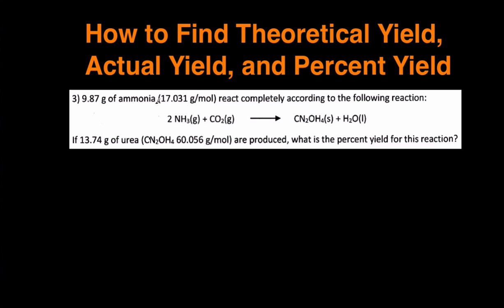This example reads: 9.87 grams of ammonia reacts completely according to the following reaction. If 13.74 grams of urea are produced, what is the percent yield for this reaction?